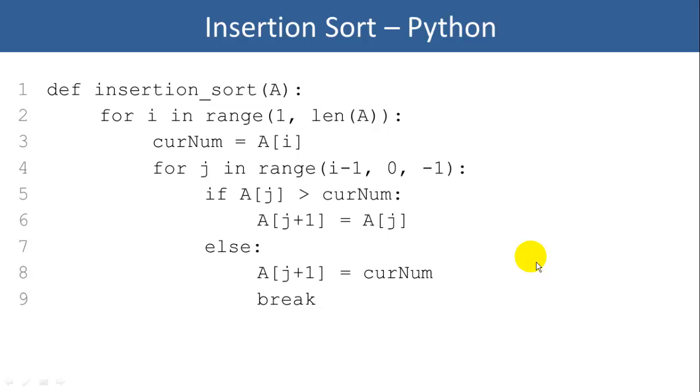So here's our code for the shifting method instead of using swaps. It basically does the same thing except it copies the current I value into a variable called currentNum. And then we compare to currentNum throughout our inside loop. And we swap J with the item on its right if it needs to be swapped. And if not, then we plop currentNum back into the sorted part of the list where it belongs.